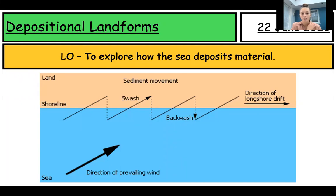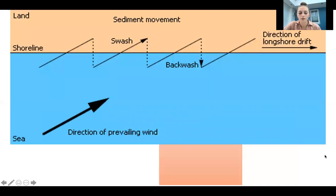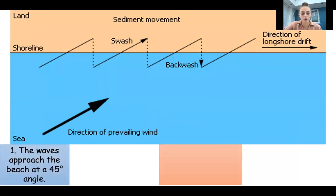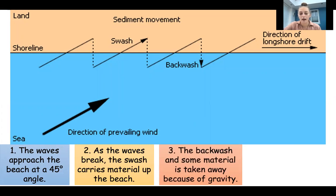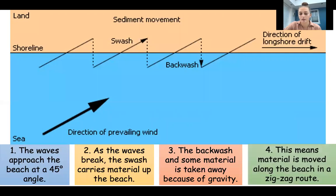Today we're going to look at depositional landforms — exploring how the sea deposits and drops material. First, a quick reminder of longshore drift, which links with depositional landforms. The formation of depositional landforms is usually due to the process of longshore drift. Waves approach the beach at a 45-degree angle — that's the swash. As the wave breaks, the swash carries material up the beach, and then the backwash moves at a 90-degree angle, taking material away due to gravity. This means material is transported along the beach in a zigzag route, as shown on the diagram.